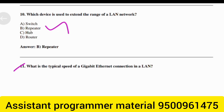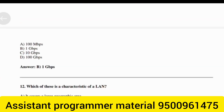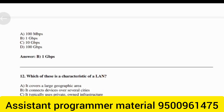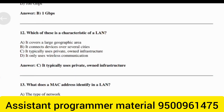What is the typical speed of a Gigabit Ethernet connection in a LAN? Answer: Option B — 1 Gbps. Which of these is a characteristic of a LAN? Answer: Option B — It typically uses privately owned infrastructure.